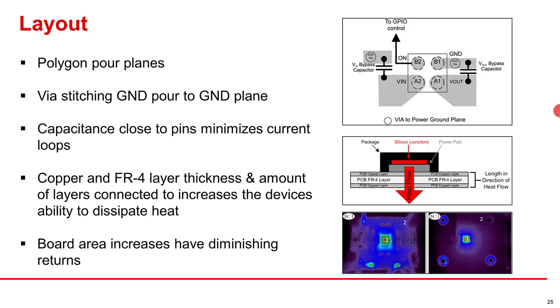The general recommendation for laying out our device is to have at least 0.5 inch squared V in and V out polygon pours and via stitching the ground pour to the ground plane. This will help with thermal dissipation. We also suggest having your input and output capacitors as close to the V in and V out pins as possible to reduce the effect of parasitics near the device. The best way to dissipate heat is by having a downward heat flow through more connected copper. Board area will also help dissipate some heat, but it has significant diminishing returns as you can see on the image on the bottom right.